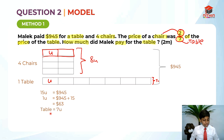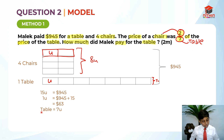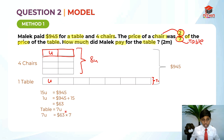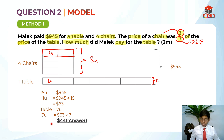We know that the table is 7 units. Malik paid for the table — he only paid for 1 table, that's why 1 table is 7 units. So 1 table is 7 units, and we just find 7 units. So 7 units is equal to $63 times 7 — $63 is 1 unit. So $63 times 7 is equal to $441. And this is the answer.